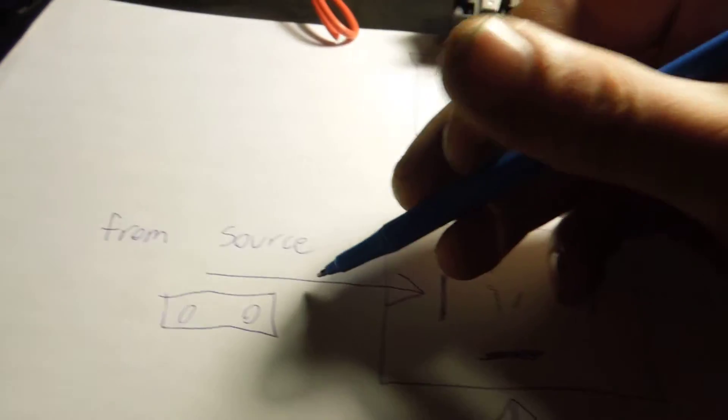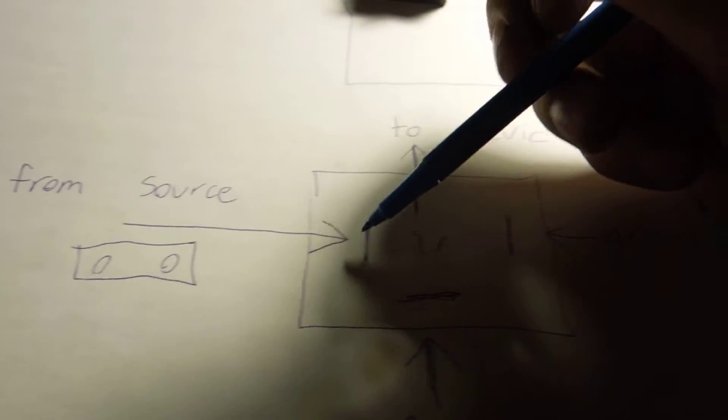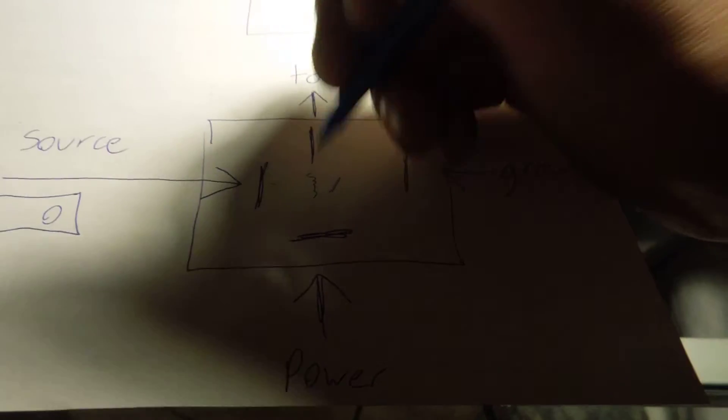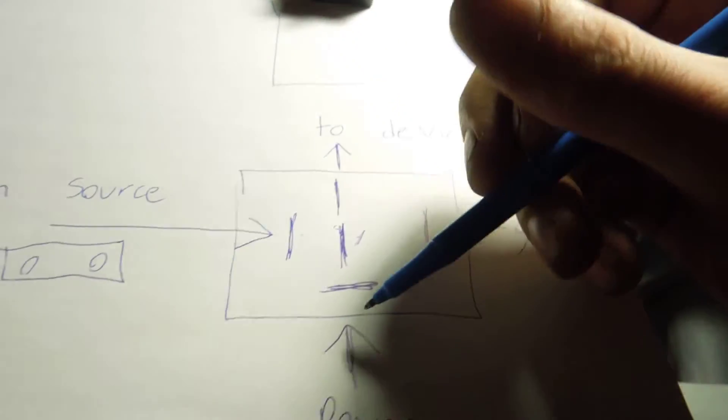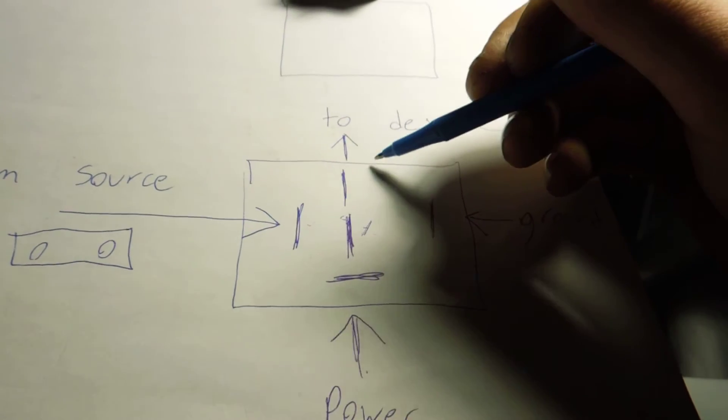And what will happen is when your deck turns on, it'll send power to that remote wire, and then this switch will connect the two railroad tracks, as we'll put it, and it'll send power from the battery to your devices.